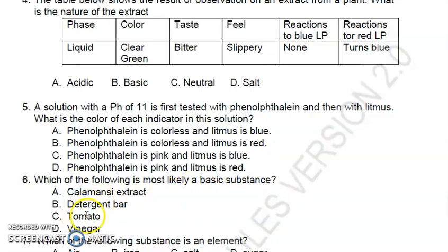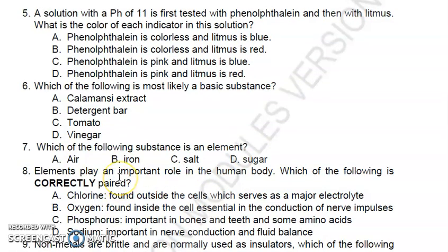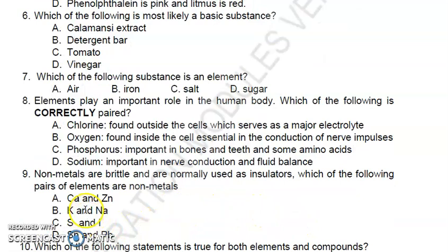Number six: which of the following is most likely a basic substance? The answer is letter B, detergent bar. Number seven: which of the following substances is an element? This can be seen in the periodic table - it's letter B, iron. Number eight: elements play an important role in the human body. Which of the following is correctly paired? The answer is letter D - sodium, important in nerve conduction and fluid balance.